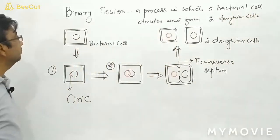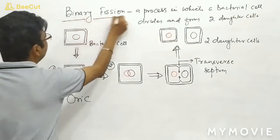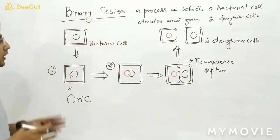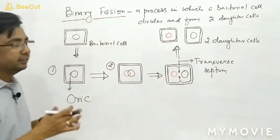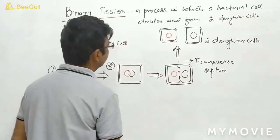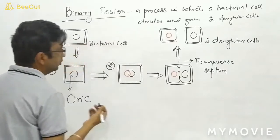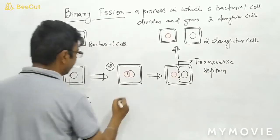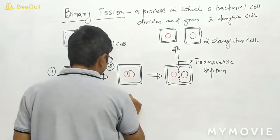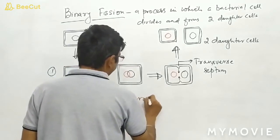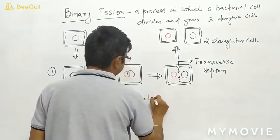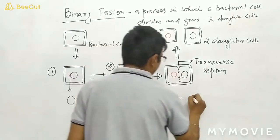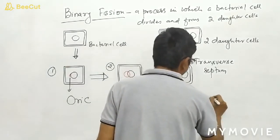So this is the definition of binary fission. This whole process takes about 20 to 30 minutes, and that time is called generation time. Generation time is equal to 20 to 30 minutes.